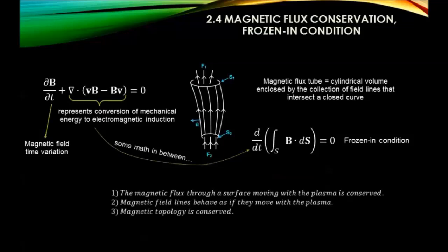The magnetic field influences the plasma and vice versa. The key conclusions from the frozen-in condition are: the magnetic flux through a surface is conserved; the field lines behave as if frozen in and moving with the plasma; and the magnetic topology is conserved - no matter how much you twist the flux tube it doesn't change. Therefore, there is no magnetic reconnection within ideal MHD - that is one of its assumptions.